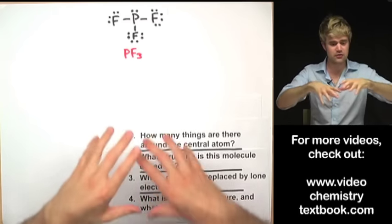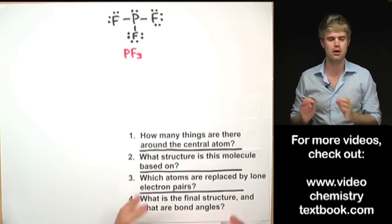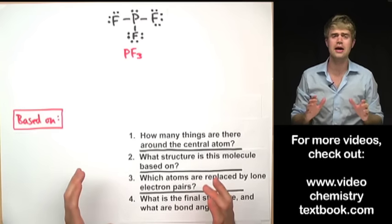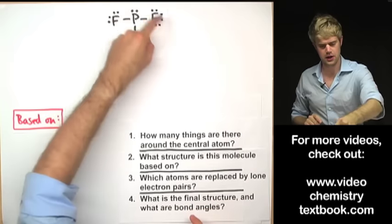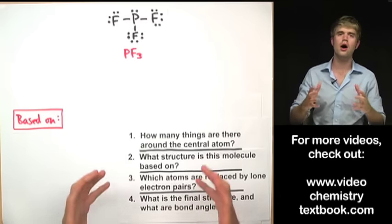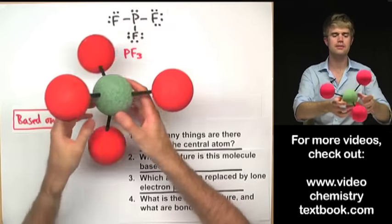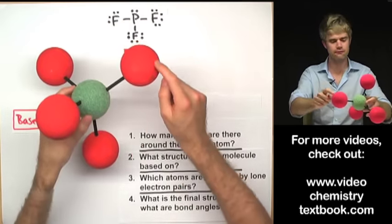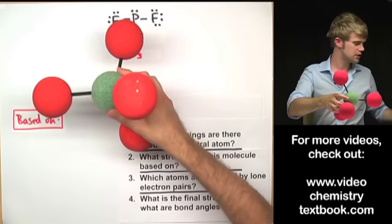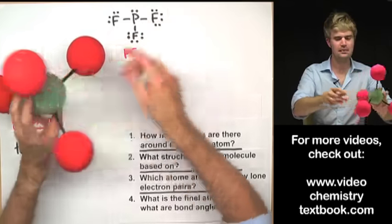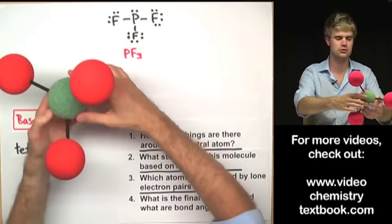Now that we know four things surround the central atom, we ask: what structure is this molecule based on? If all four of these things surrounding the central atom were other atoms, we'd get a tetrahedral shape — four atoms surrounding a central atom. Because PF3 has four things around the central atom, it is based on this tetrahedral structure.